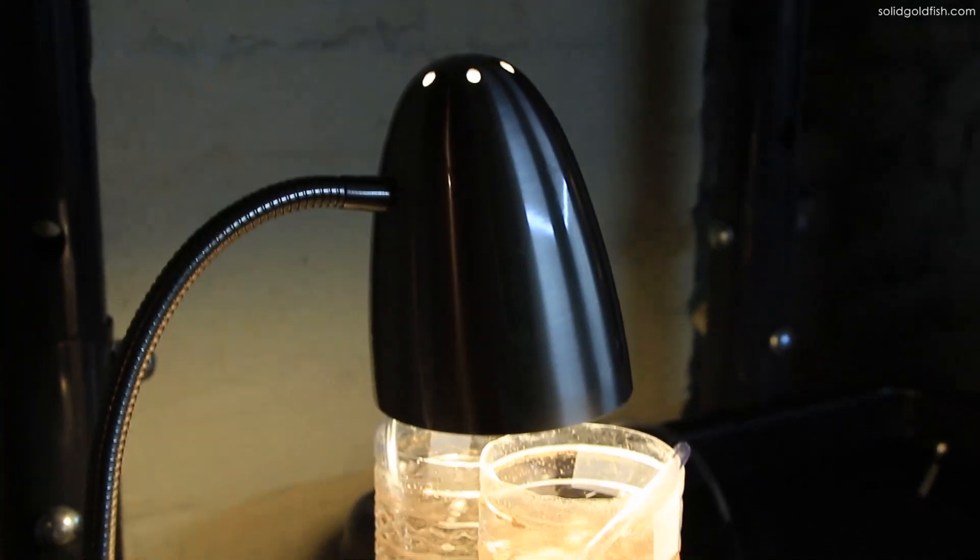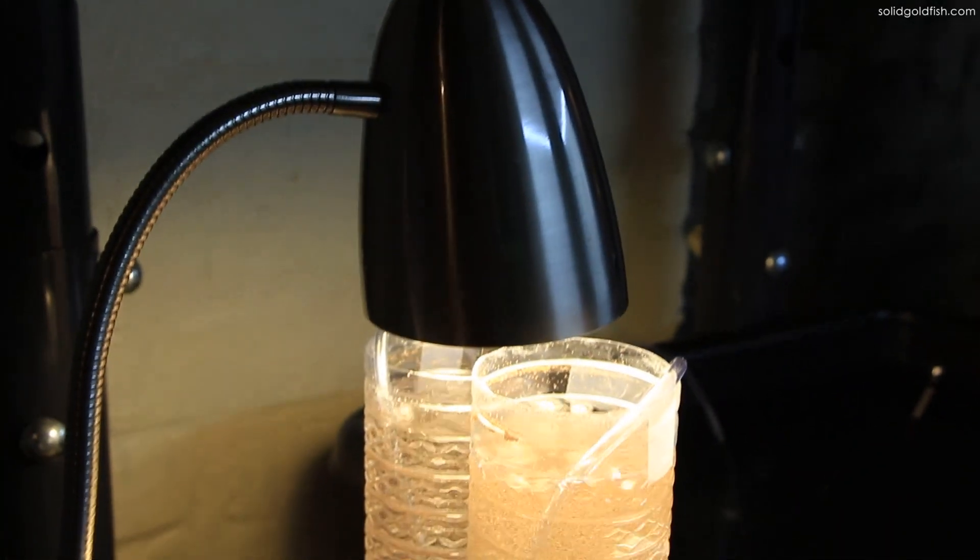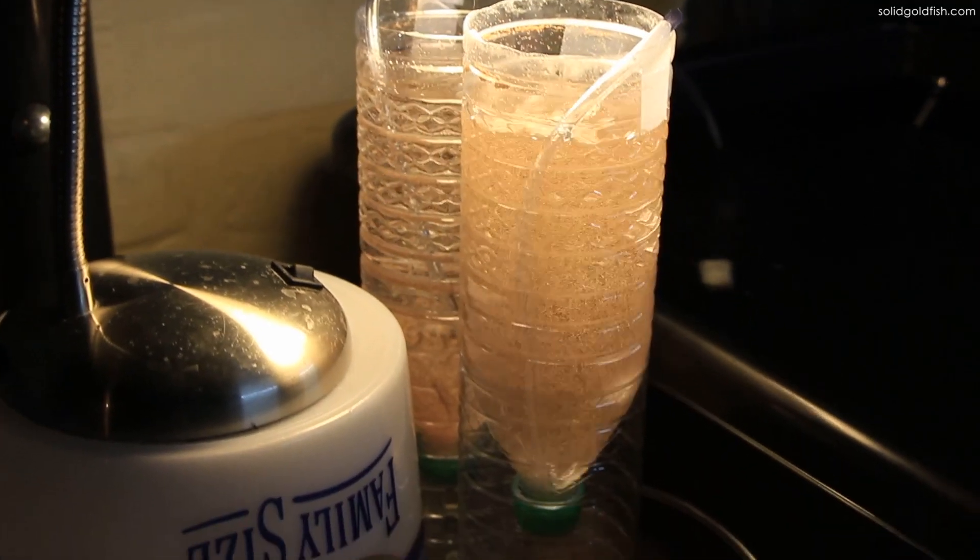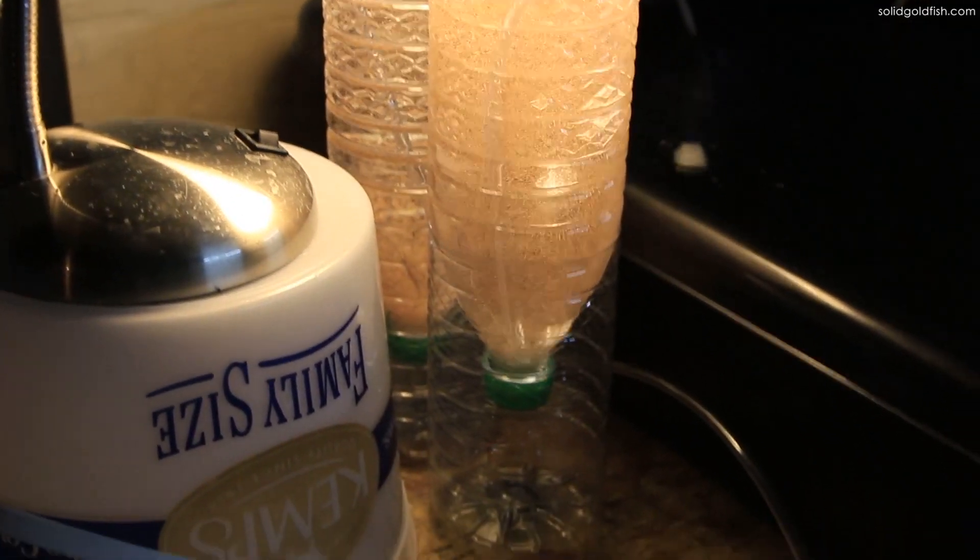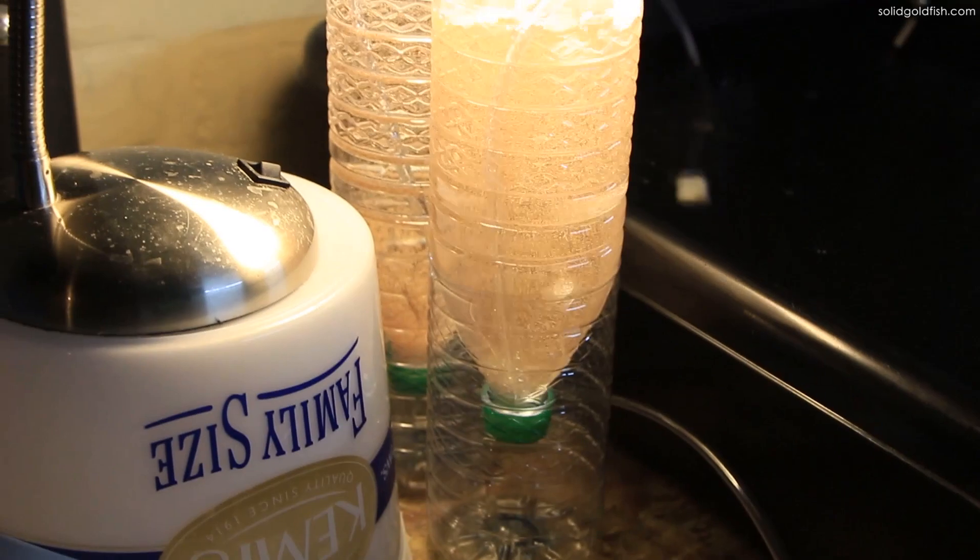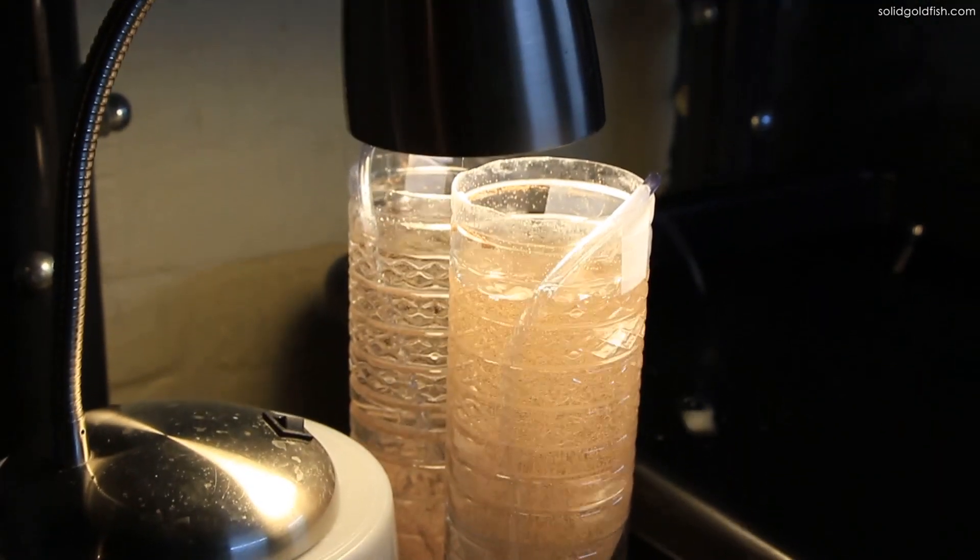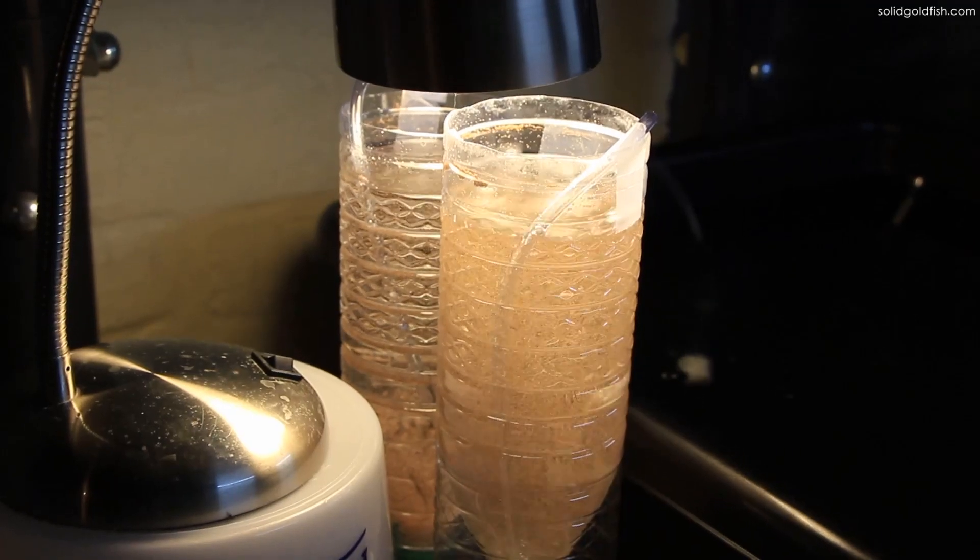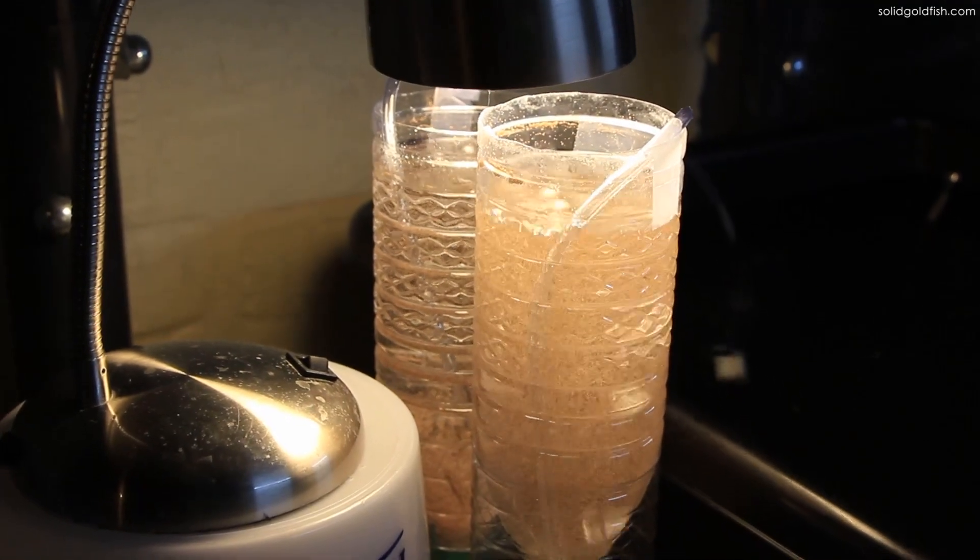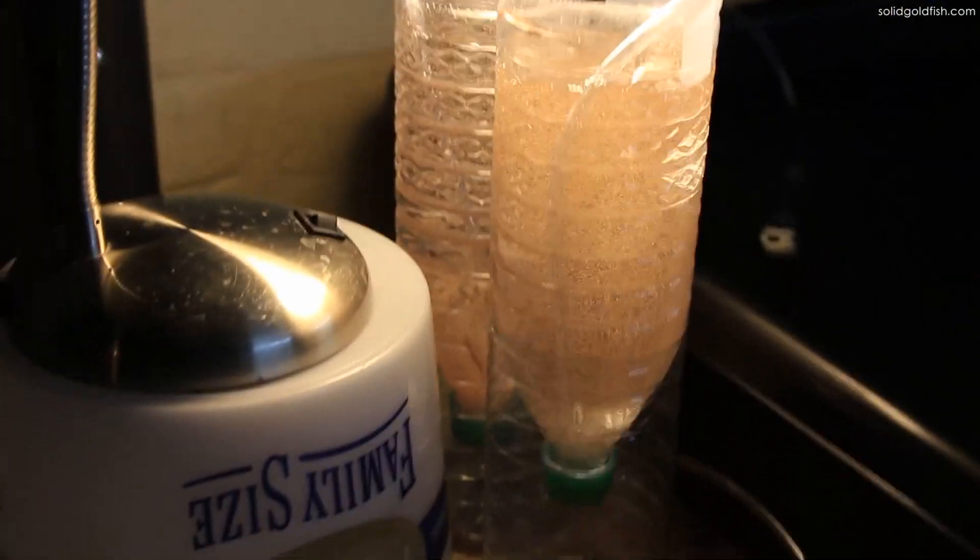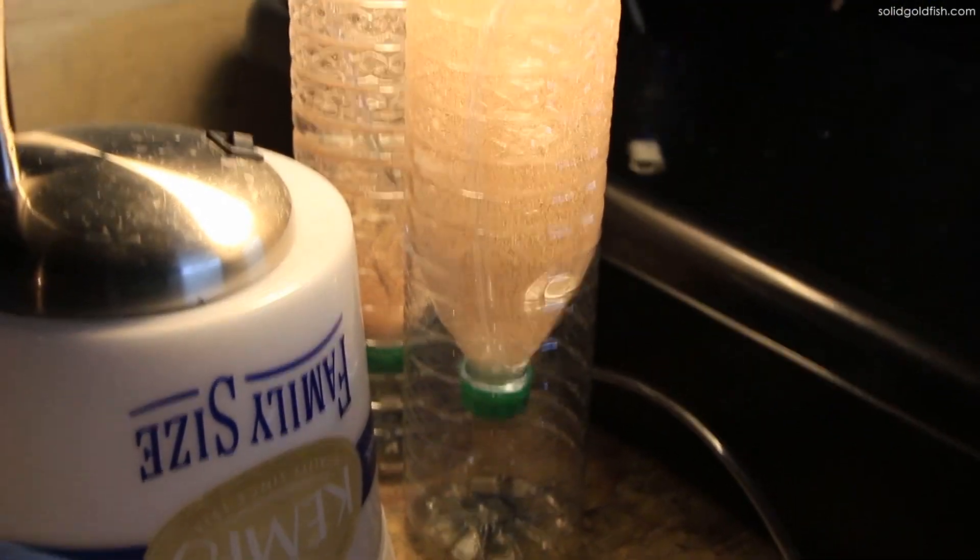So baby goldfish are so tiny that they need to eat a food that's very tiny as well, and they also typically only eat foods that are live and actually moving around. So baby brine shrimp are an excellent choice for baby goldfish to eat, and you just cultivate them in little DIY hatcheries like this.